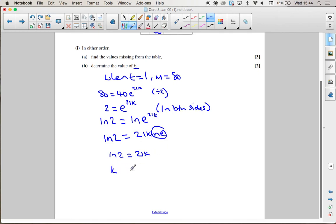Last thing we need to do is divide by 21. So we get that k equals ln 2 over 21. You can leave your answer like that. If you work it out on your calculator, you will get 0.03.